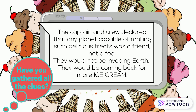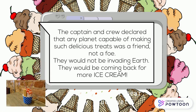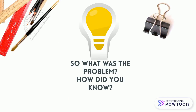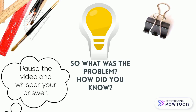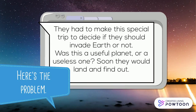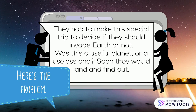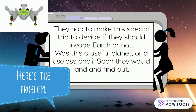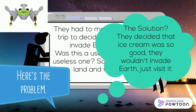Have you gathered all the clues? So what was the problem? How did you know? Here's the problem: they were trying to decide if they were going to invade Earth. The solution? They decided that ice cream was so good they wouldn't invade Earth — just visit it.